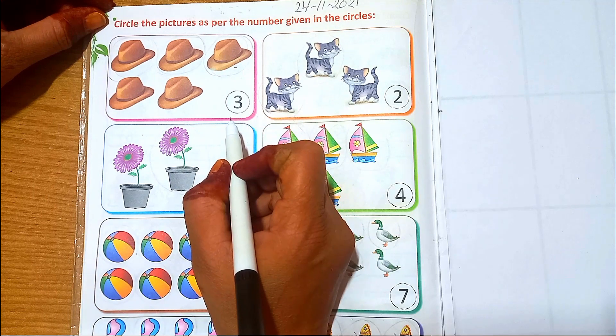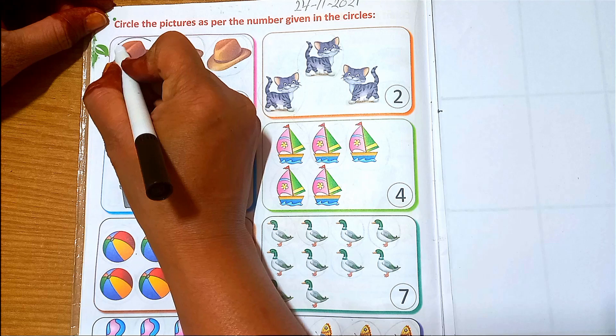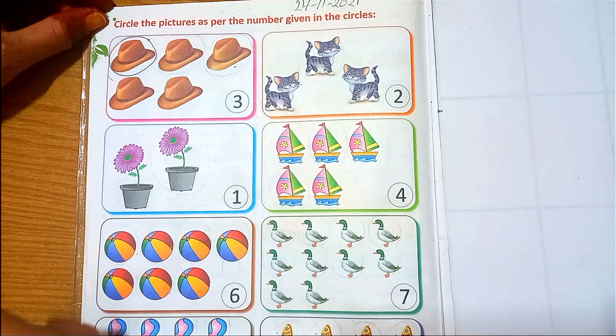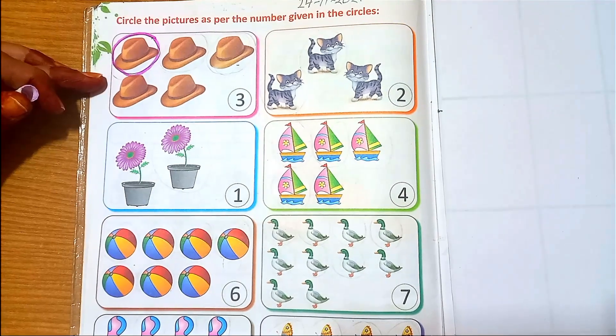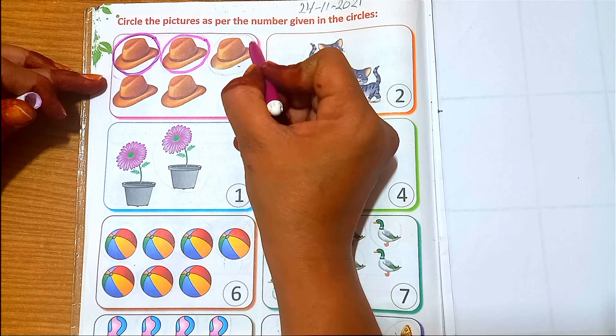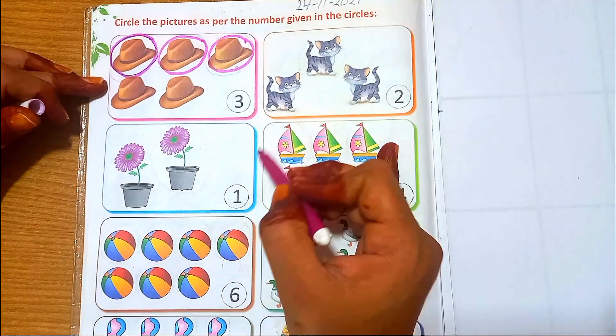Three. Three hats count. Three hats circle. One hat, two hats, and three. Three hats. Next.